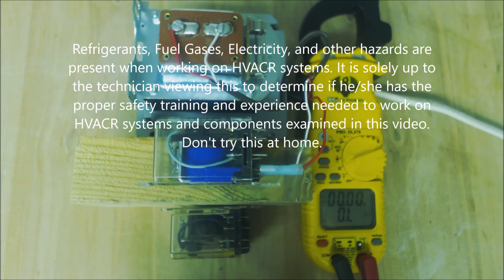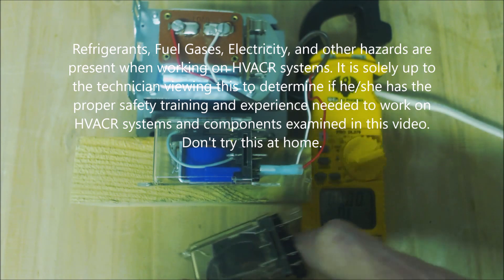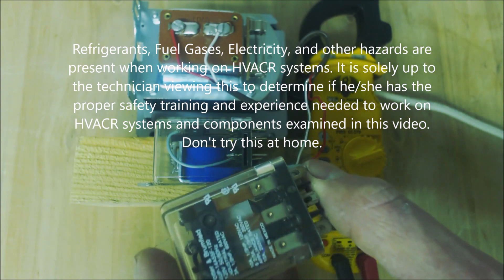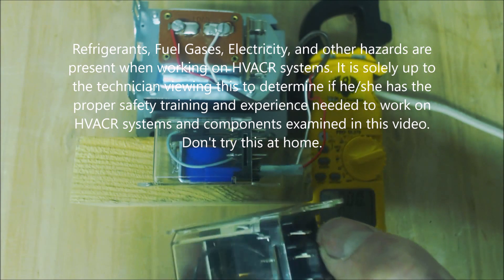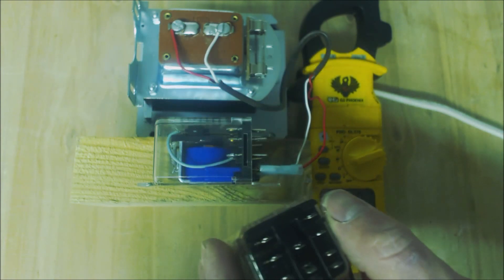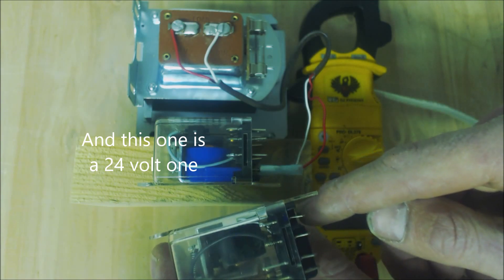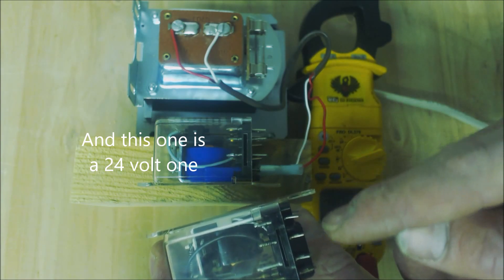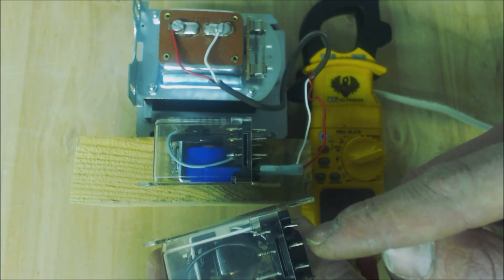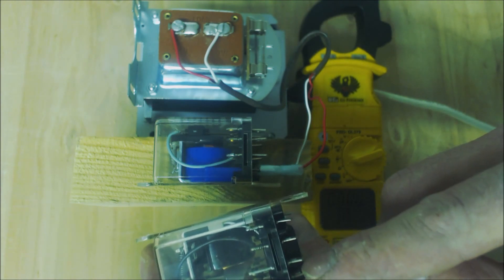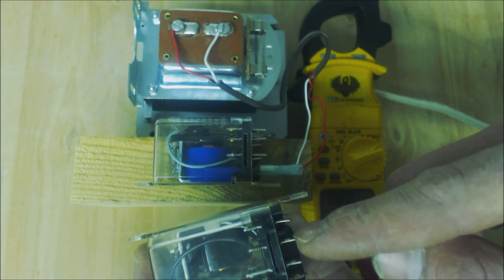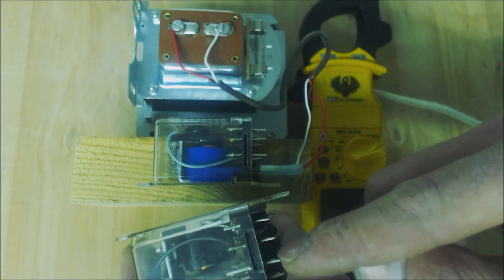Hey guys, this is AC Service Tech. Today we're looking at plug-in type general purpose relays. Right here we have a 110 volt coil, and what that's going to do is open the contacts between here and here when it's powered, and then close the contacts between here and here when it's powered.